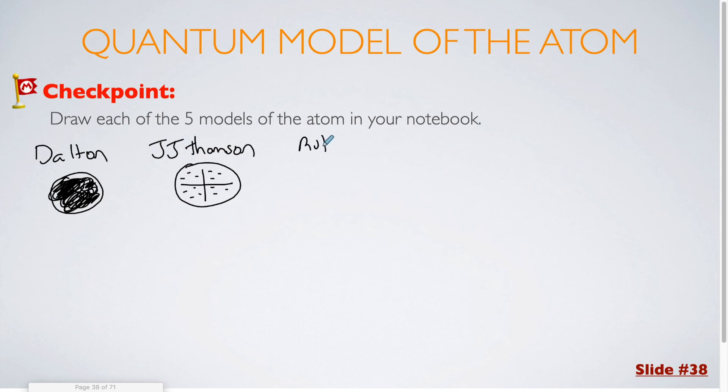Next up, you would have Rutherford's model. The main difference between Rutherford and J.J. Thompson's model is that the protons are now found in the nucleus at the very center, so there is no positive charge through the entire atom. It is all condensed to the very center, and then electrons will be somewhere outside of that, which could be shown like this.